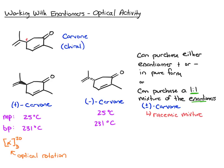One enantiomer will rotate plane polarized light clockwise; the other will rotate it counterclockwise. For carvone specifically, the light gets rotated 61 degrees. In the plus enantiomer it's rotated positive 61 degrees, and in the minus enantiomer it's rotated to the same magnitude — just in the opposite direction — negative 61 degrees.